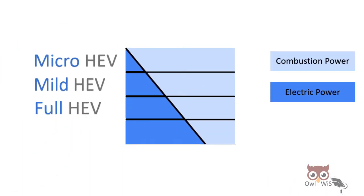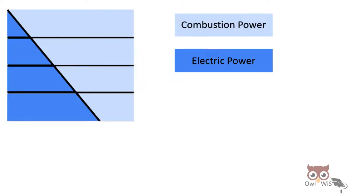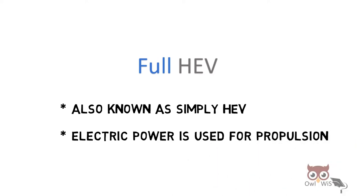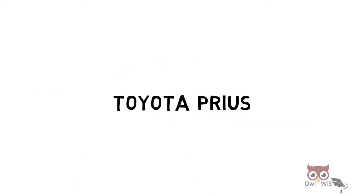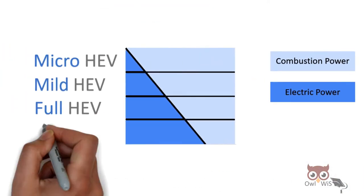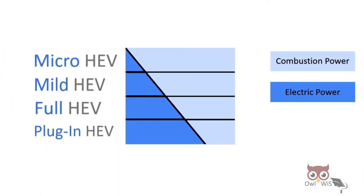Next is full HEV. Also known as simply HEV, electric power is used for propulsion. Toyota Prius is an example of full HEV or simply HEV.